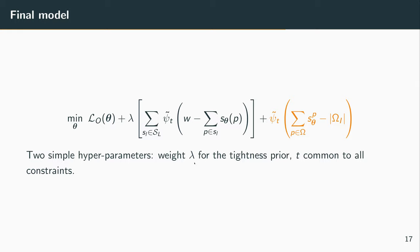So this final model has two simple hyperparameters to tune. There is the weight lambda for the tightness prior, which will balance it with respect to the loss for the outside of the box. And we also have t, which is the slope of the log barrier, which we have to schedule to increase over time. But this is the same t for all instances of log barrier. There is no dedicated t for each constraint.